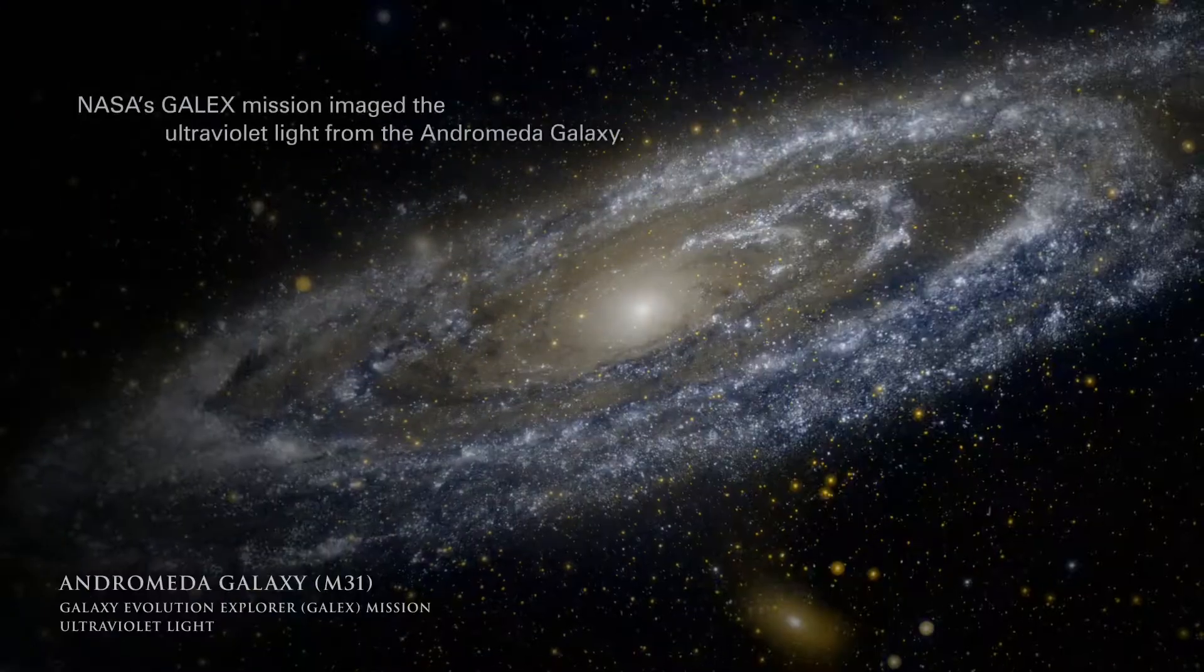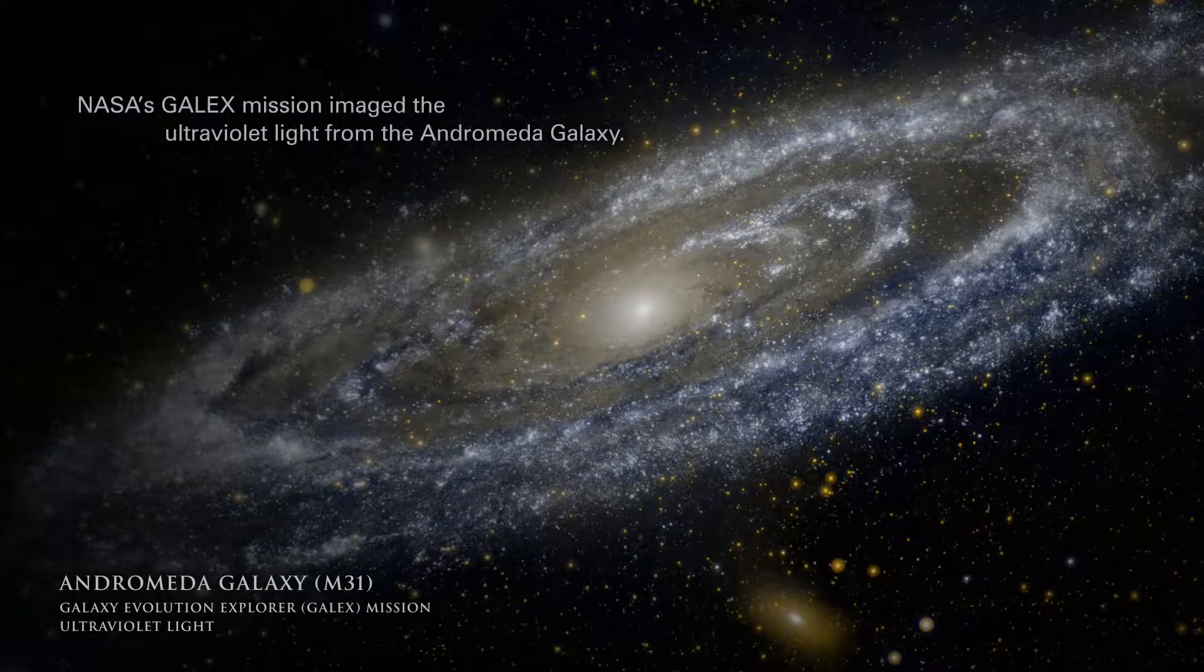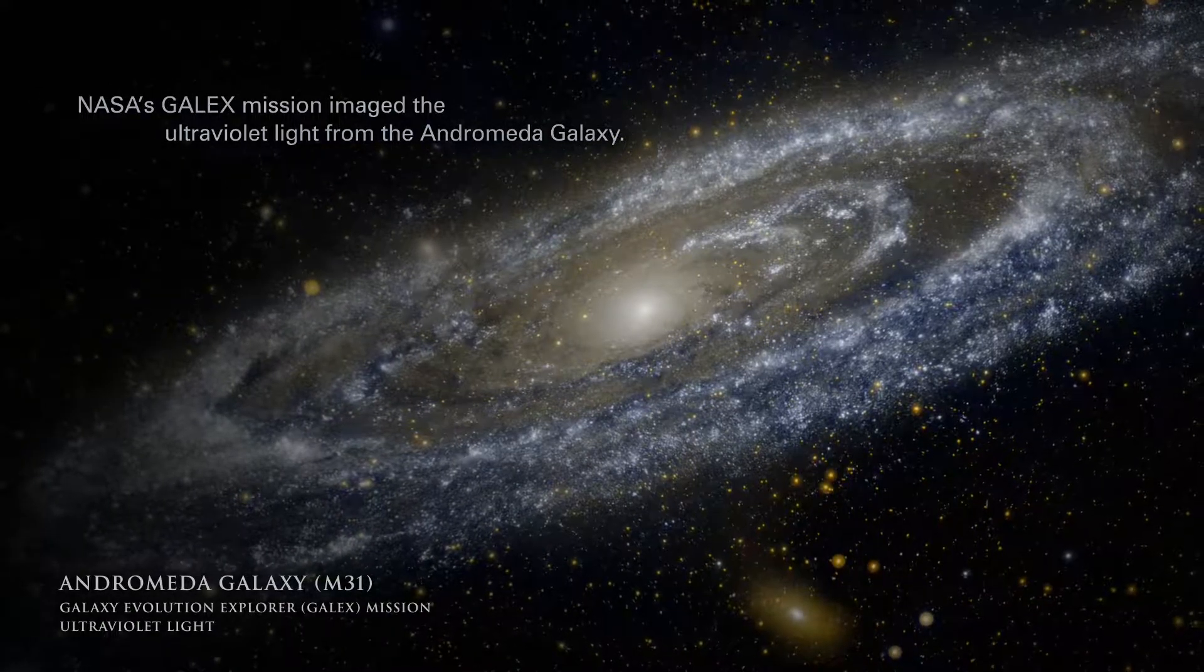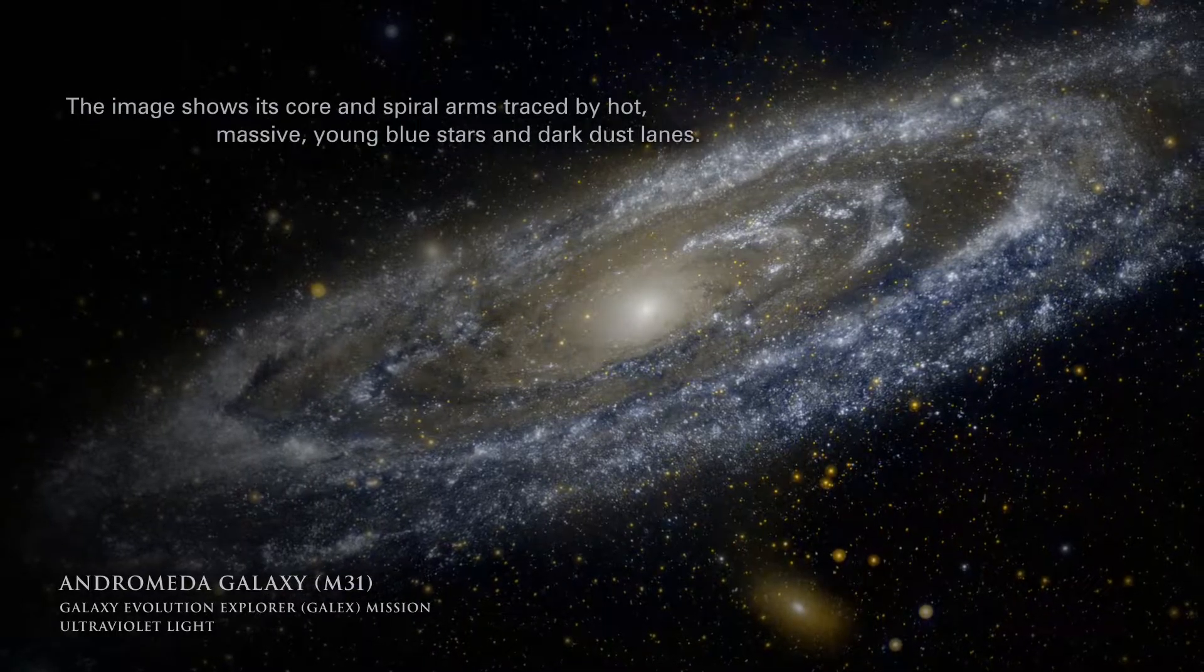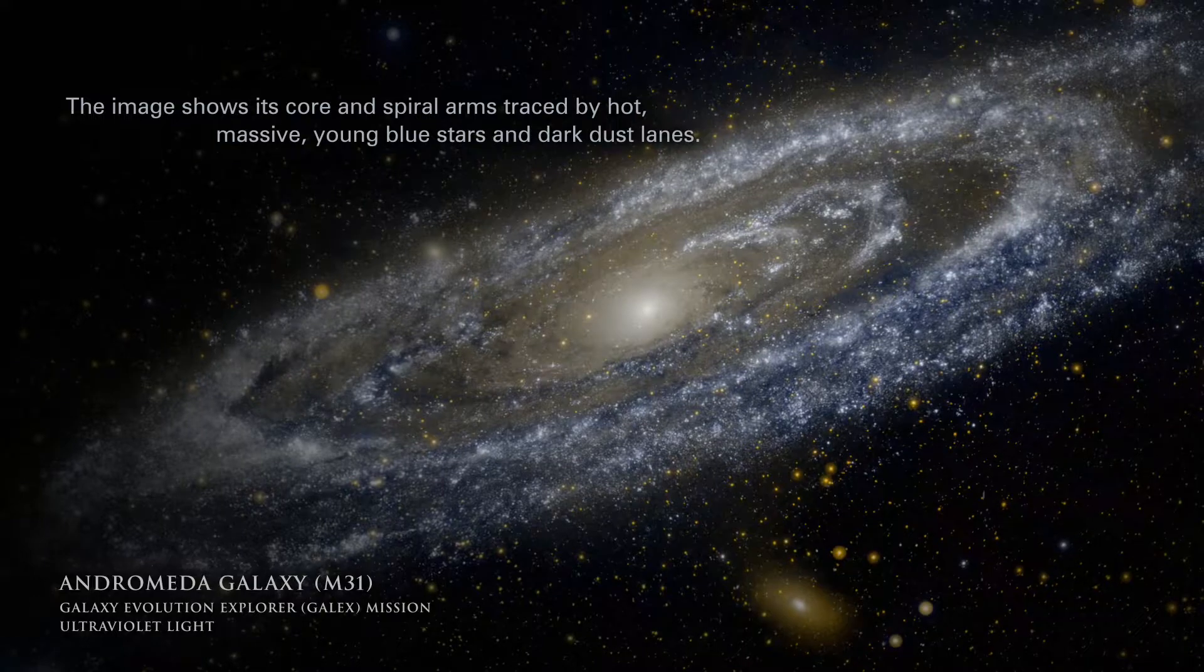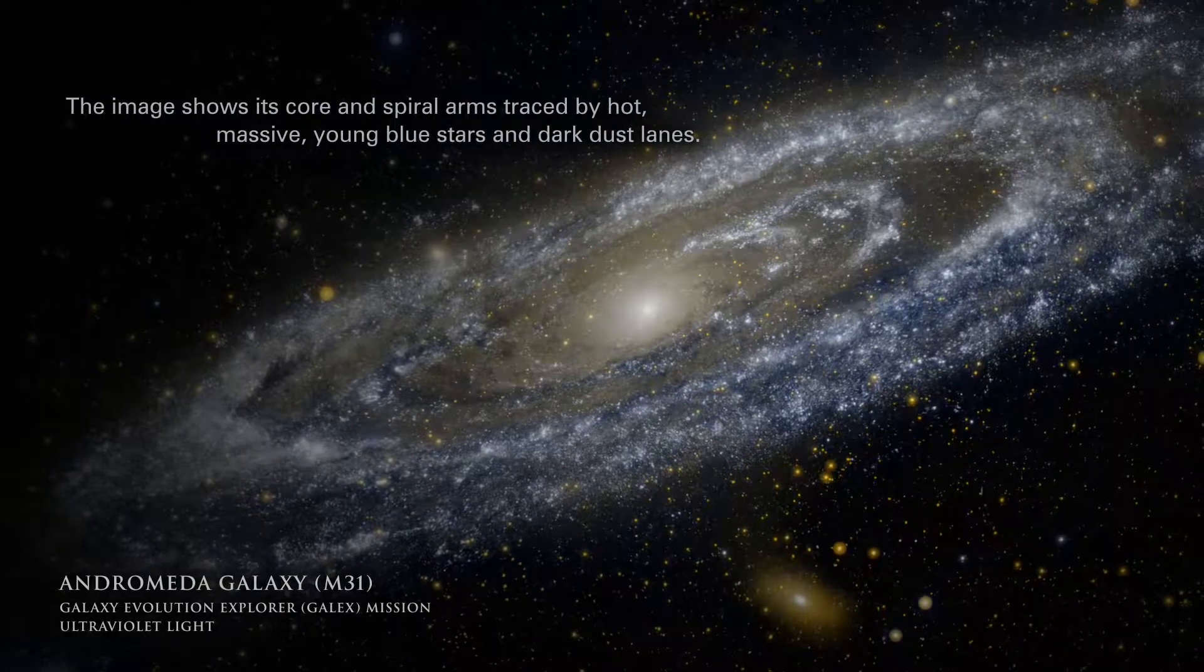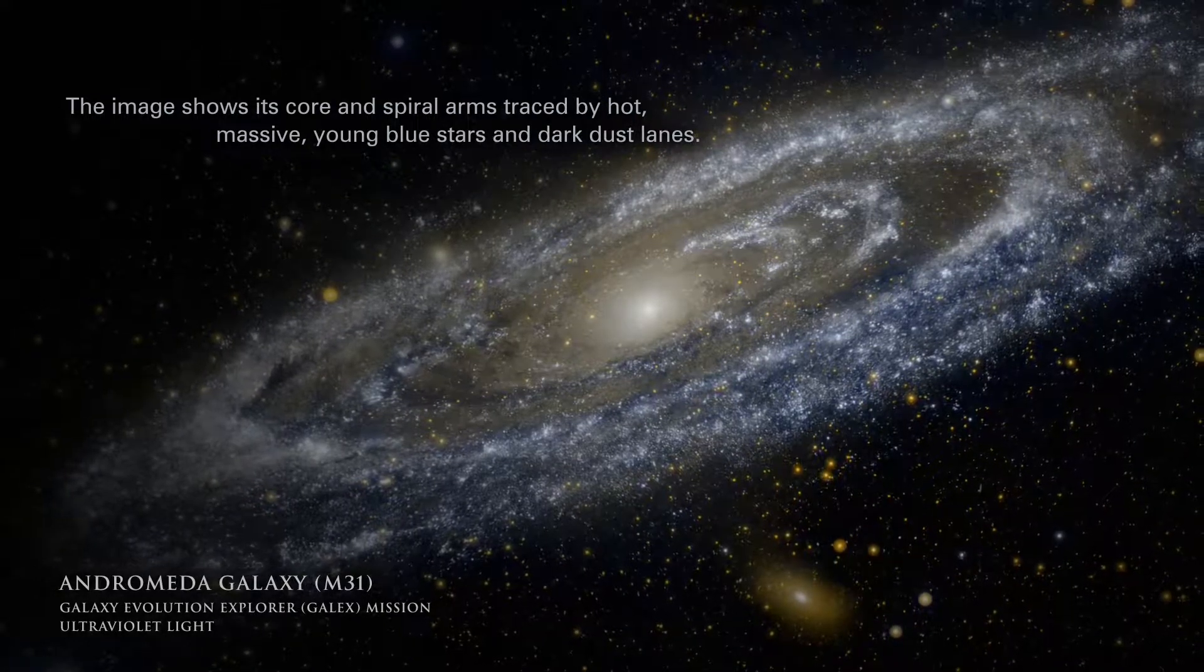NASA's GALEX mission imaged the ultraviolet light from the Andromeda galaxy. The image shows its core and spiral arms traced by hot, massive young blue stars and dark dust lanes.